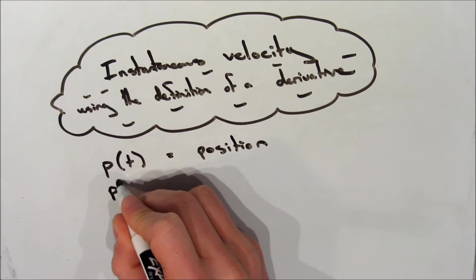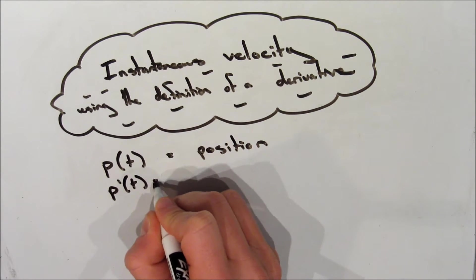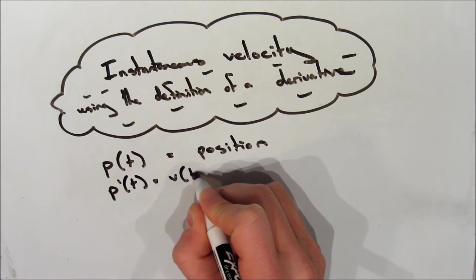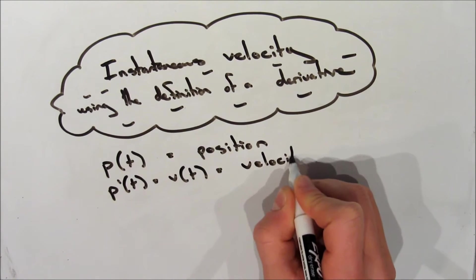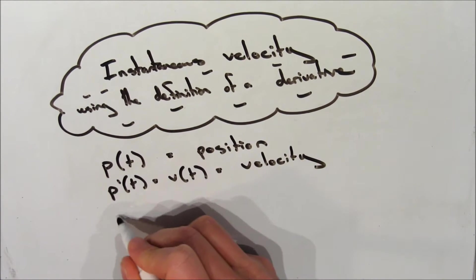It's good to know that the derivative of p of t, so p prime of t, is equal to the velocity function related to that position function, so v of t. This function will calculate the velocity.